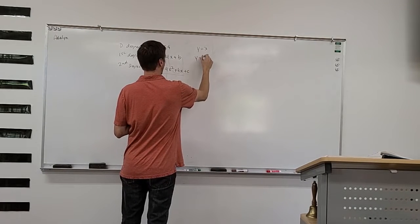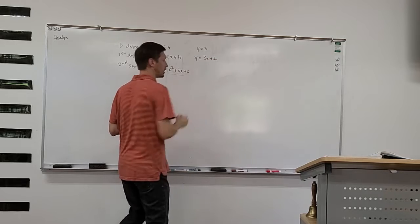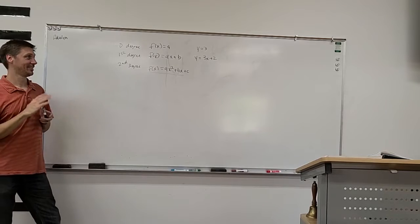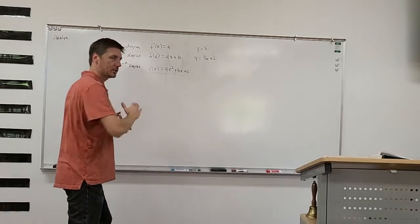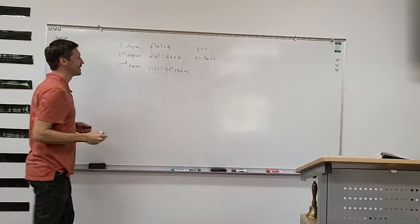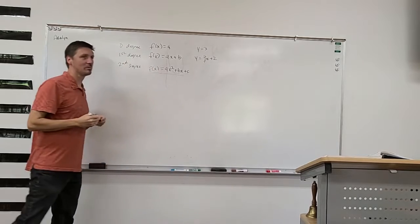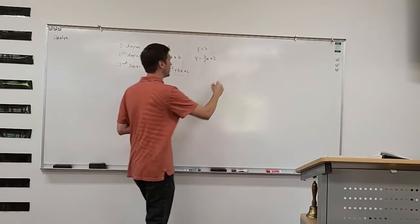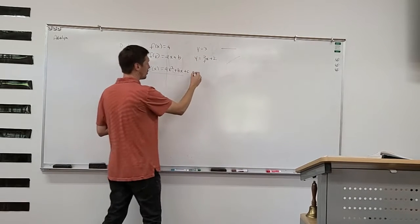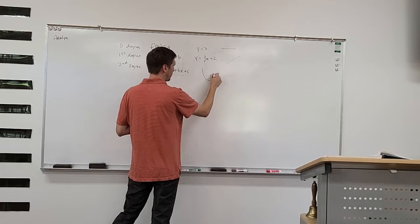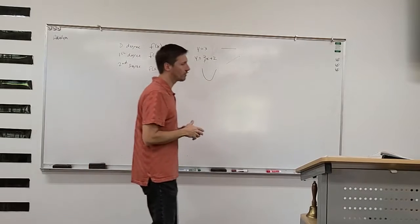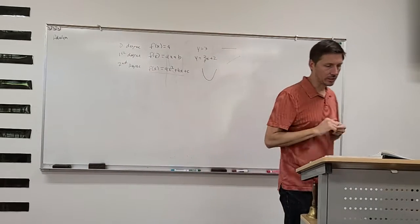For something like 3x plus 2, the graph is just a diagonal line. Because this is a positive number with a positive slope, it's increasing — it's just a line. And for the second degree, we recognize these are all parabolas. They may be flipped depending on the sign in the front, but that's the basic shape.